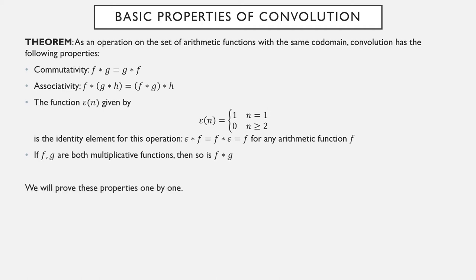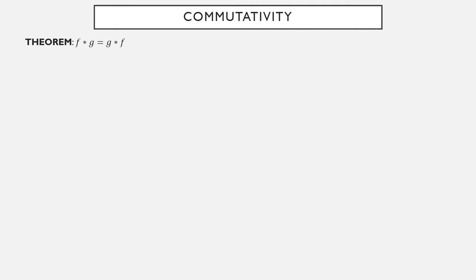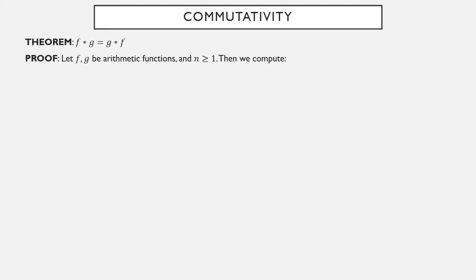We're going to go through and establish these one by one. First up: commutativity — f star g is the same function as g star f. Suppose f and g are two arithmetic functions and n is a positive integer. We simply need to prove that f star g of n and g star f of n are always equal. Well, f star g of n is a sum over the divisors of n: f of the divisor d and g of the cofactor n over d.